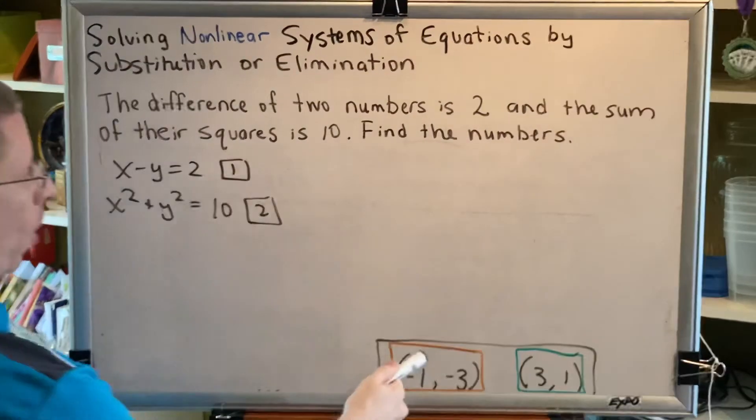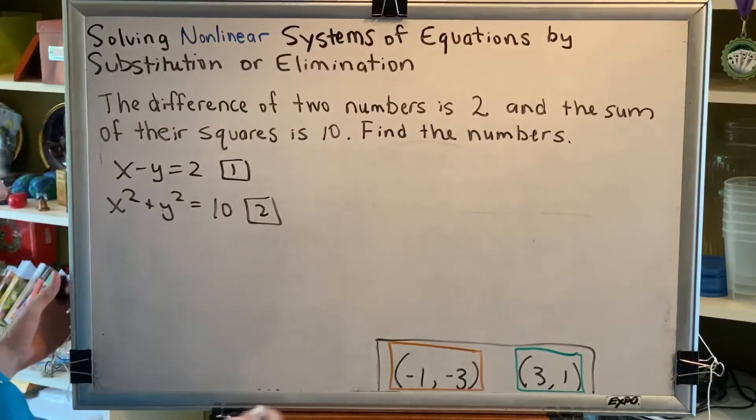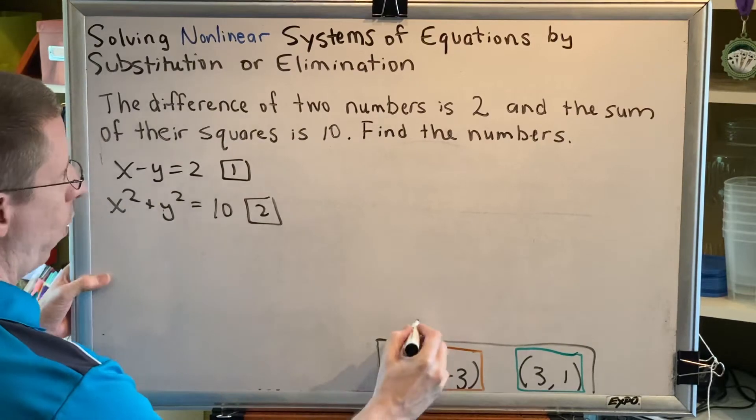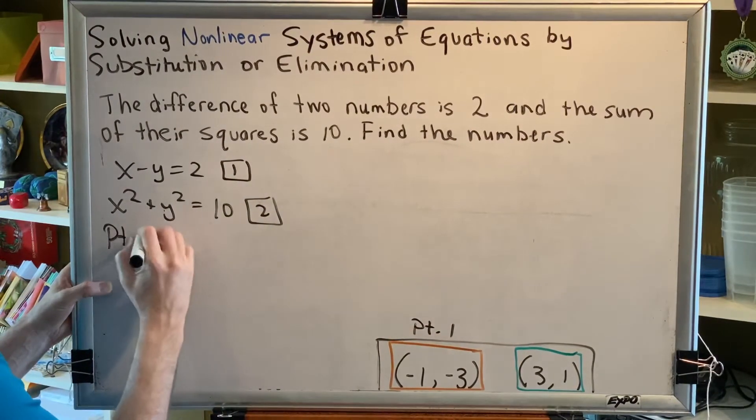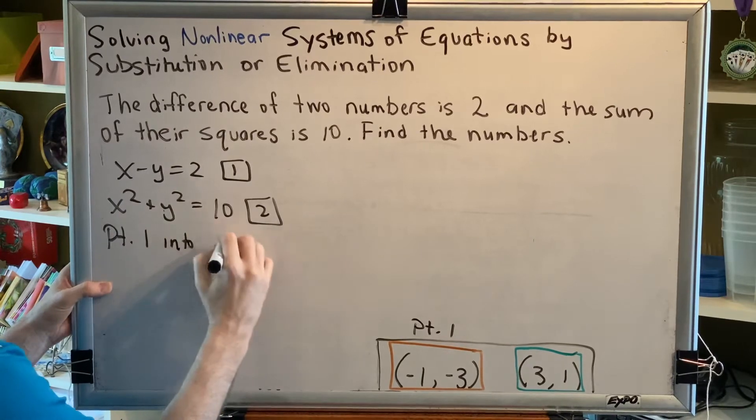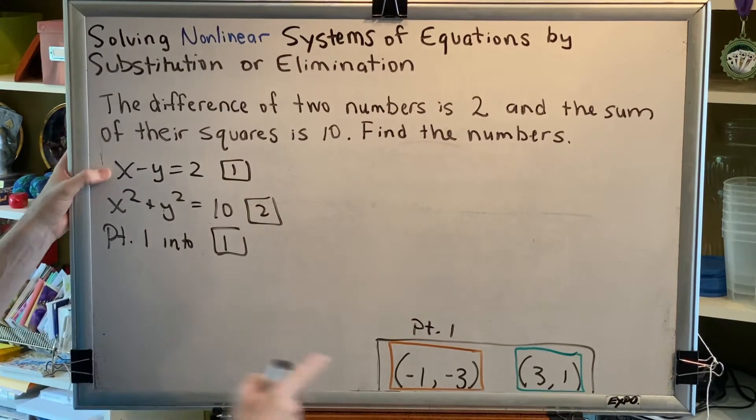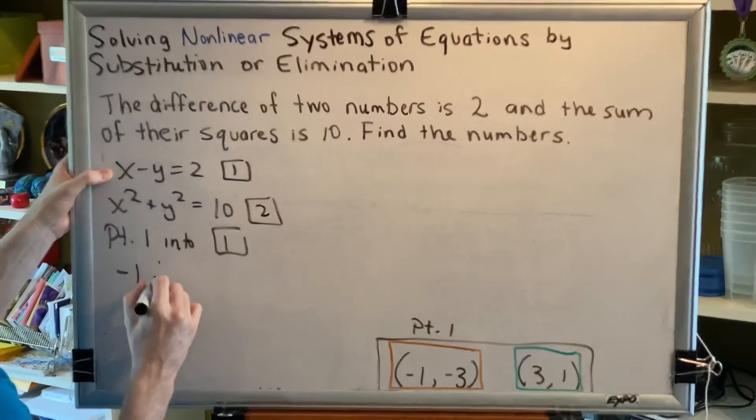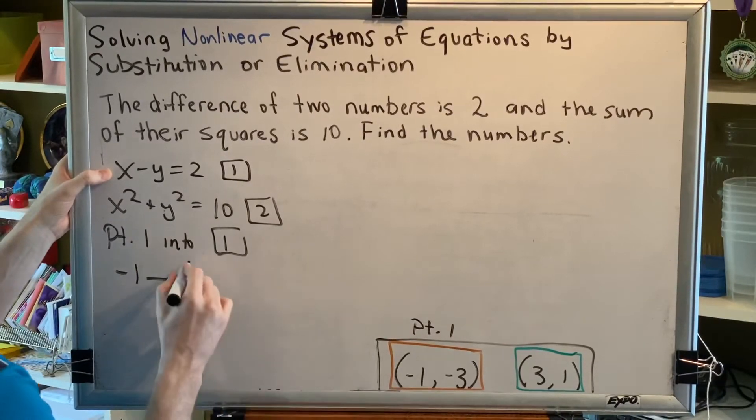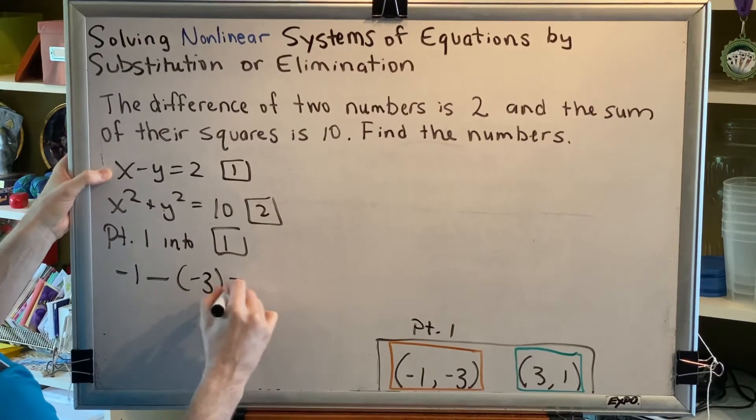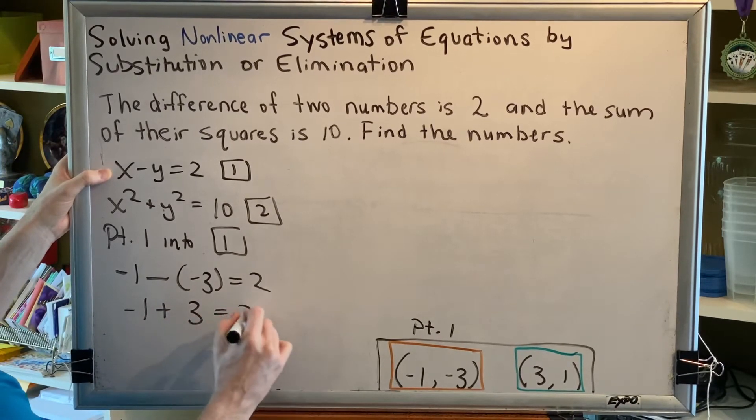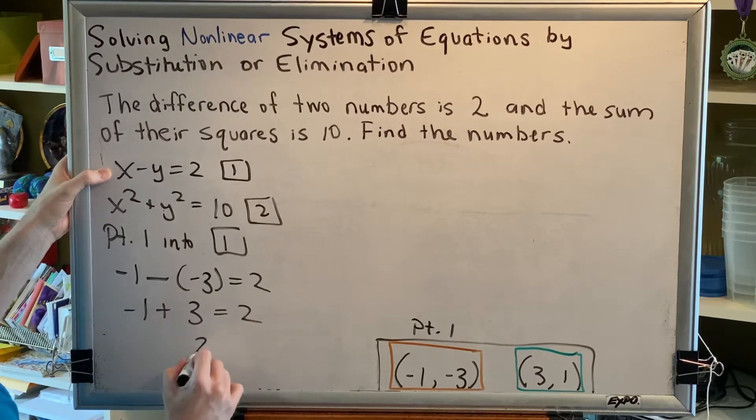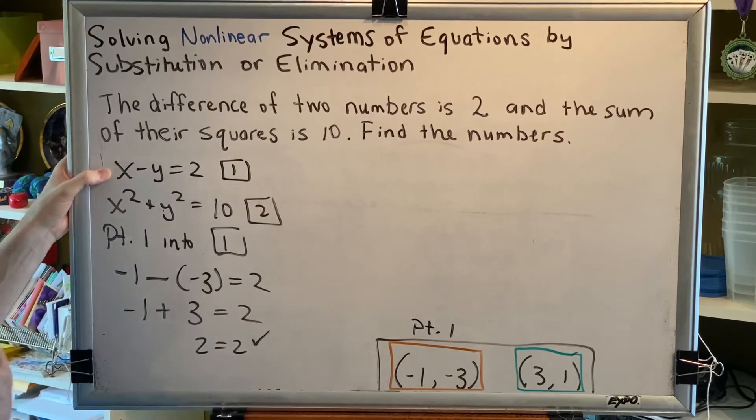We can now plug both points into both equations. For example, let's plug in point 1, our orange point, into equation 1. Then we would get x, which is negative 1, subtract y, which is negative 3, equals 2. Subtracting a negative is adding. So I get negative 1 plus 3 equals 2. 2 equals 2, and that works.